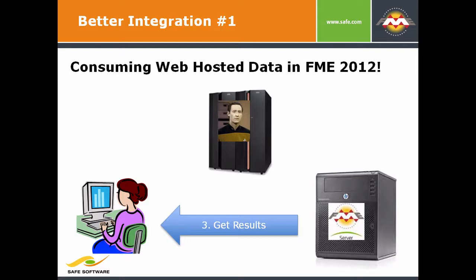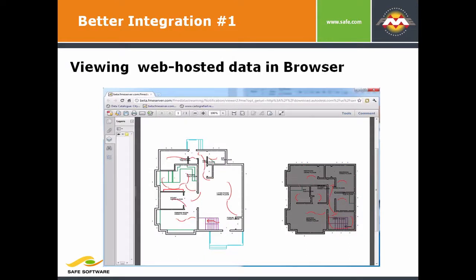We added the ability for FME Server to be passed a URL, and then it will go get it. There's a simple option in the dialog — an option to get URL — and then you specify the URL where the data lives. FME goes and gets it, runs the workspace just as it would before, and gives you back the result of that workspace. That's huge. You're working on the web, you find data on the web, you want to use it, you no longer have to download it. Just point FME Server at it, and away it goes.